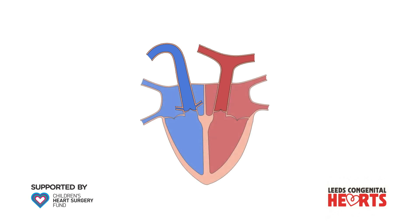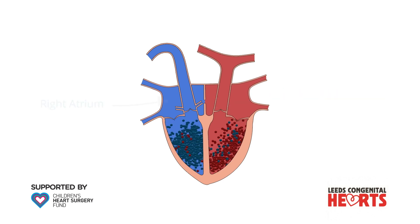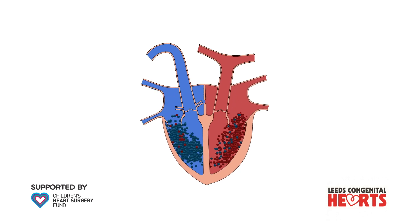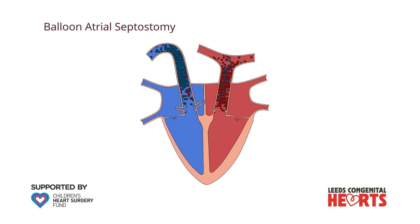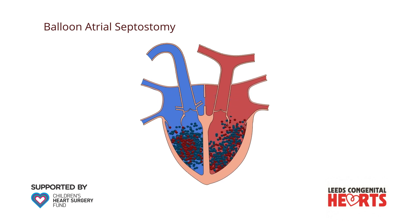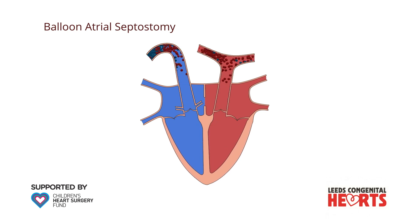The immediate priority is to ensure that at least some oxygenated blood can get to the body. When a baby is born, there is a natural hole called a patent foramen ovale between the two collecting chambers of the heart, the right atrium and the left atrium. Often this hole is not wide enough, so a procedure called a balloon atrial septostomy is performed. A tube is inserted through a vein in the groin into the right atrium and across into the left atrium. Once in the left atrium, a balloon is inflated and pulled back into the right atrium, enlarging the hole between the right and left atrium and so allowing more oxygenated blood to be pumped around the body.